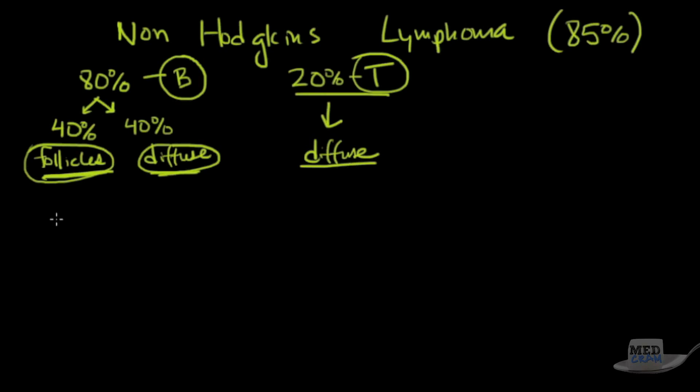Now let's talk about what are the characteristics of a lymphoma that make it good, what I mean by good is less proliferative, or bad, more proliferative. So let's talk about less proliferative or more proliferative.